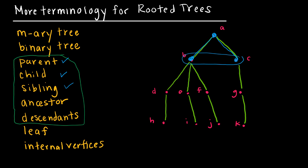Ancestors and descendants work the same as in normal English. If I'm looking at A, A has descendants B, C, D, E, F, G, H, I, J, and K, whereas all of those have an ancestor of A. It's the same idea as an actual family.